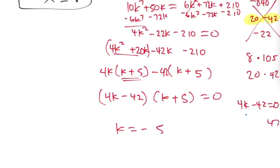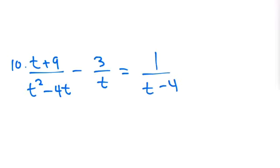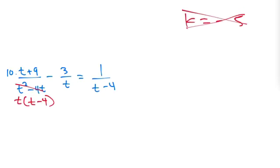Okay, number 10, so I hope that helps, because man, did I have to look hard. Number 10 is t plus 9 over t squared minus 4t minus 3 over t. Let me double check that I copied right. Equals to 1 over t minus 4. This can be factored out to t times t minus 4. So your common denominator is, so I'm going to erase this and write that there.